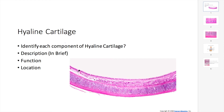The hyaline cartilage has many components. It has an outside component and an inside component. The outer layer is called the perichondrium, which is made up of dense irregular connective tissue. This is the area where you can find chondroblasts or chondrocytes and the dense matrix. It surrounds the inner content — the matrix.